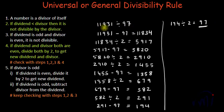We get 97, which is divisible by 97. Therefore, 11,931 is also divisible by 97. This was the procedure for checking divisibility. Now let's discuss the logic.